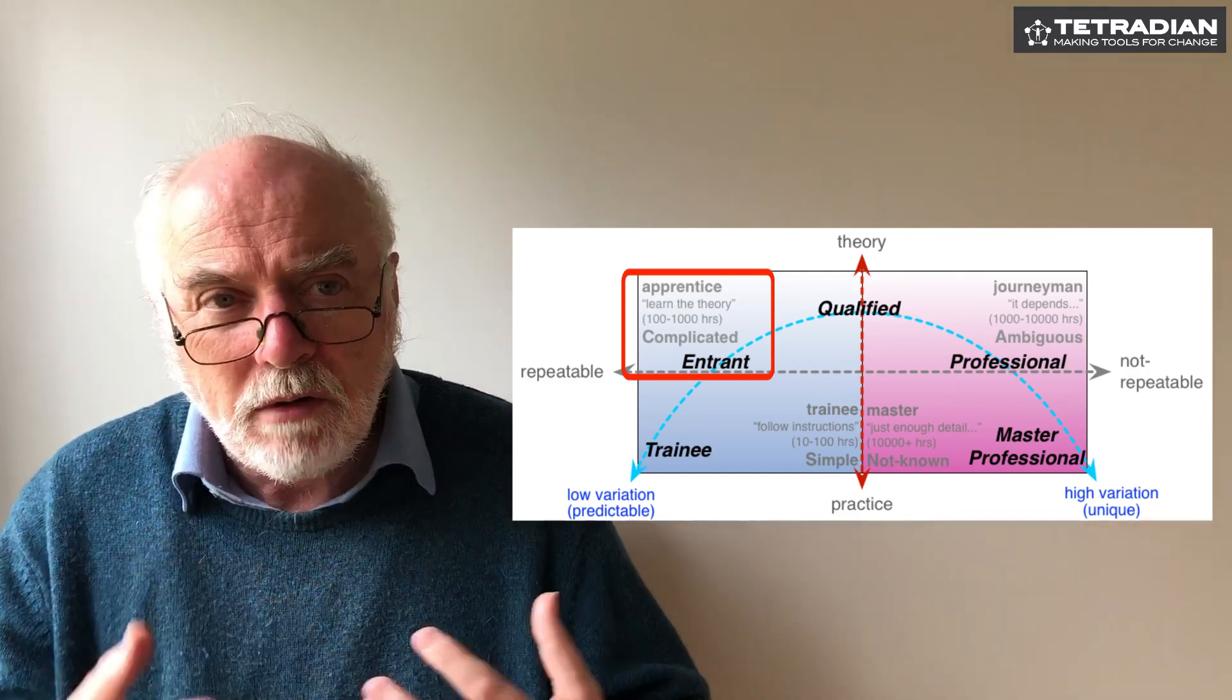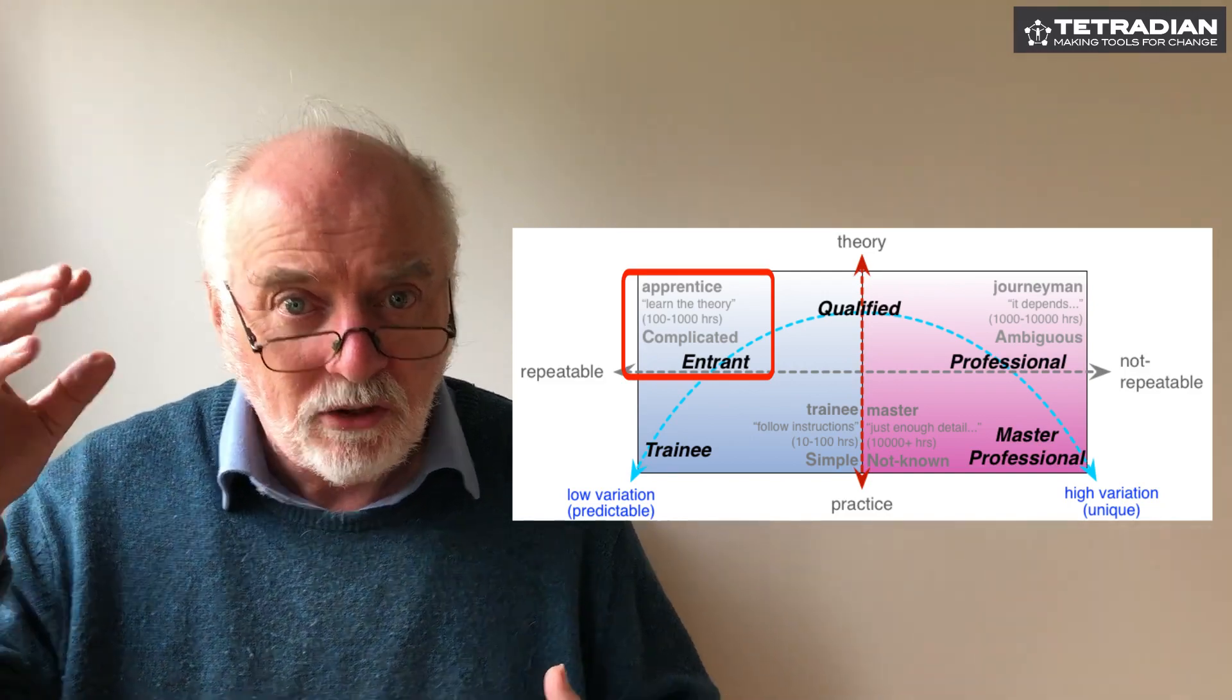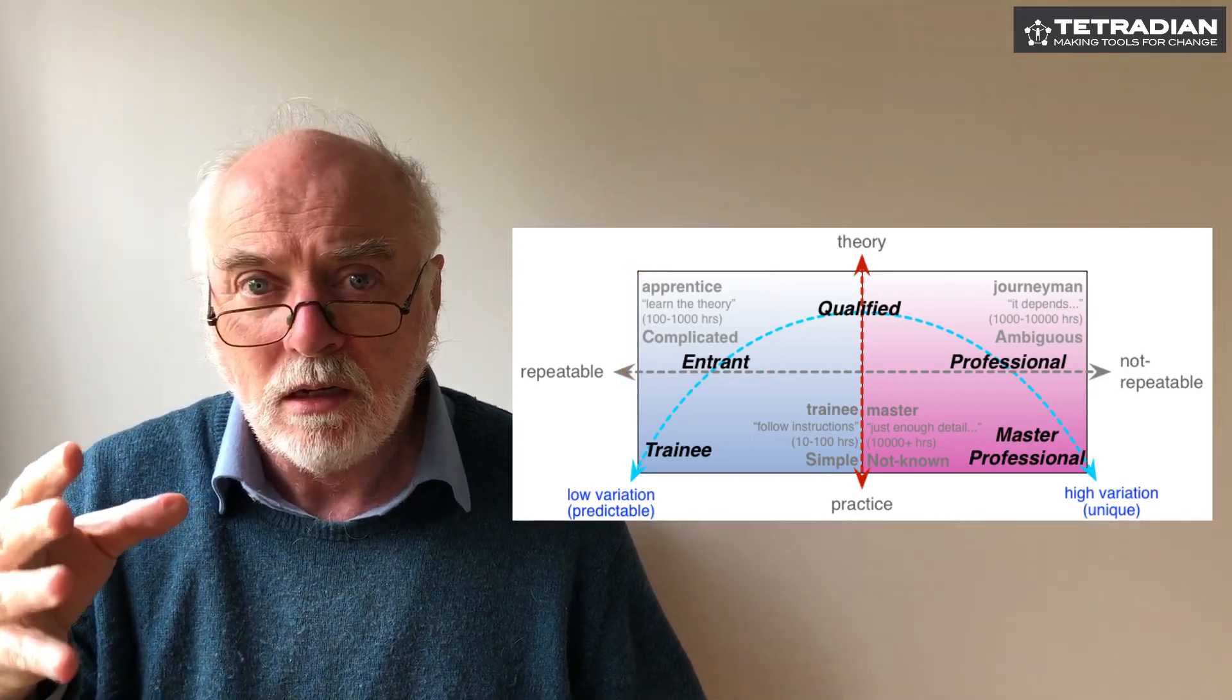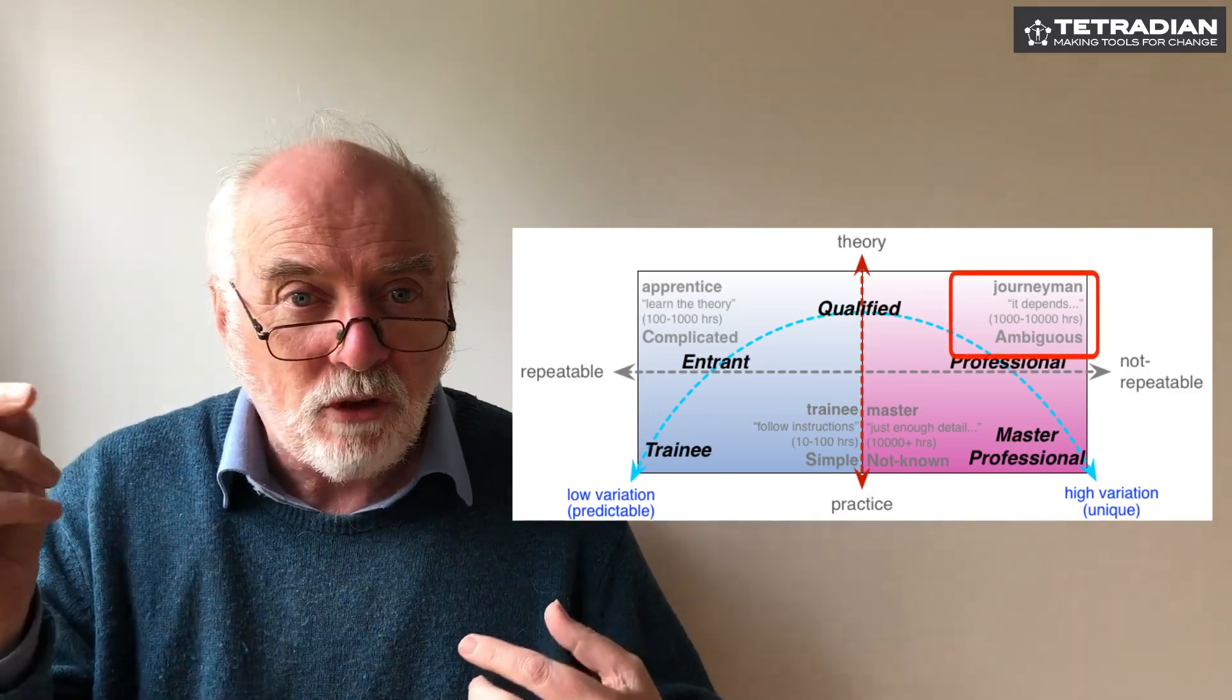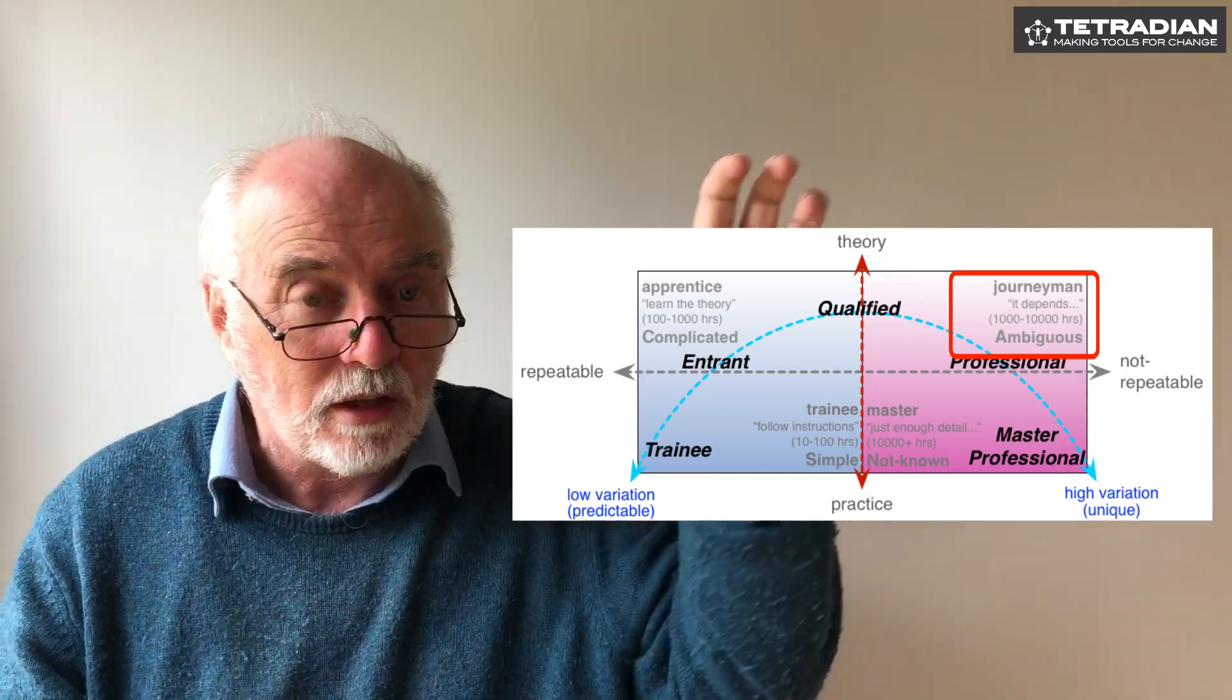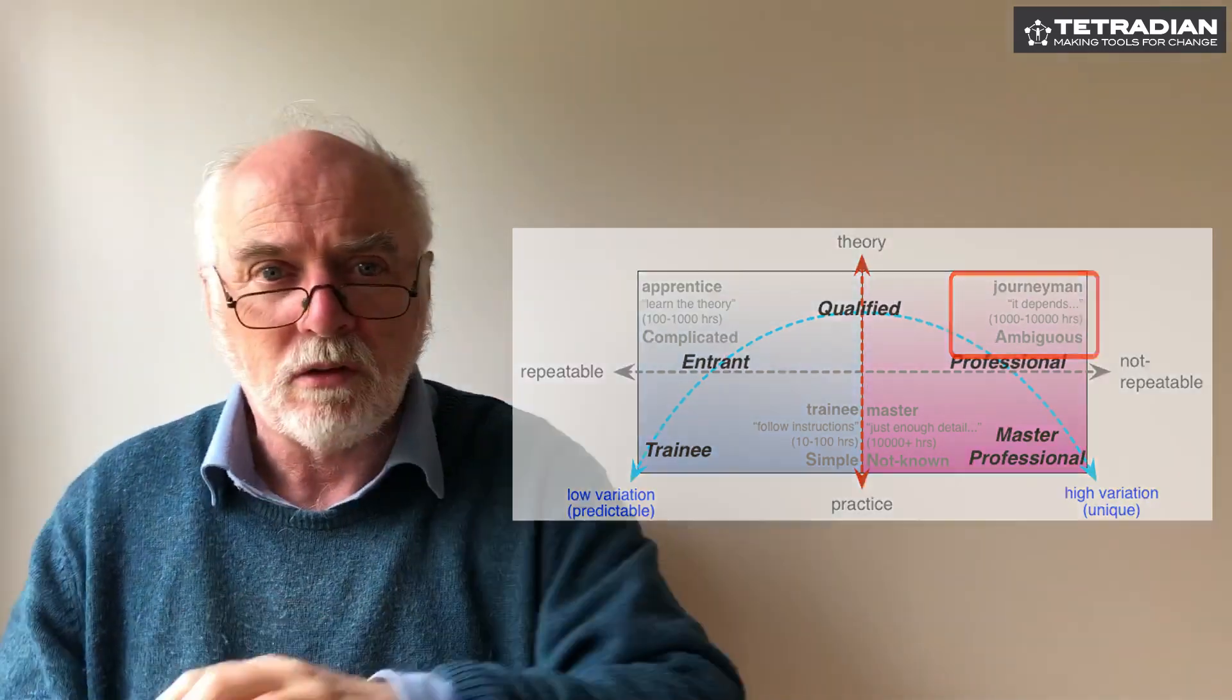So there is a very real problem where we have apprentices who have just enough knowledge to get into trouble and nothing like enough to get out of it. There's a similar clash actually between the trainee and the journeyman because the journeyman will do things that the apprentice doesn't understand and they'll completely confuse the trainee.